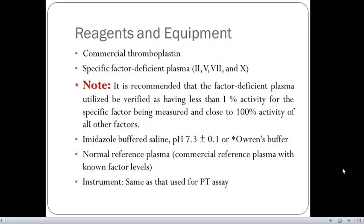We will use imidazole buffered saline. In most of the factor assays, we will be using imidazole buffered saline, which is of pH of 7.32 plus or minus 0.1 or Owren's buffer. And the normal reference plasma, which is commercial reference plasma with known factor levels, that you will find in the kit. And the instrument is the same that is used for PT assay.